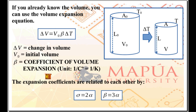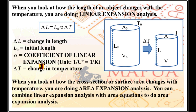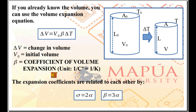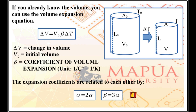Each material has three values of expansion coefficient: coefficient of linear expansion (alpha), coefficient of area expansion (sigma), and coefficient of volume expansion (beta). These three are related: sigma equals two times alpha, and beta equals three times alpha. So if a problem gives you alpha but you need to do volume expansion analysis, simply multiply alpha by three to get beta.